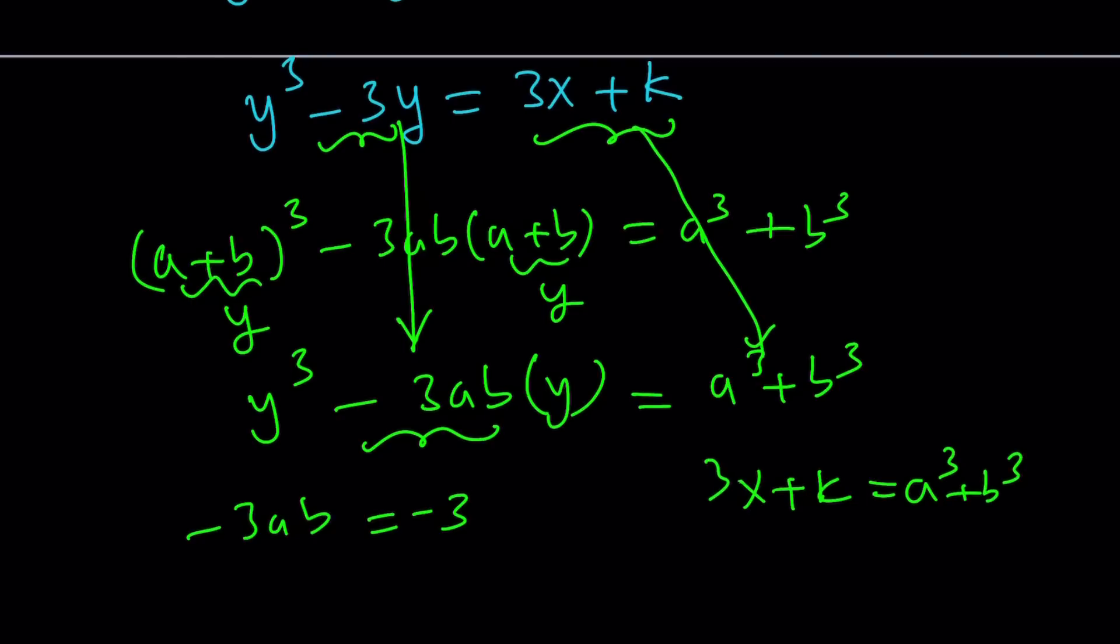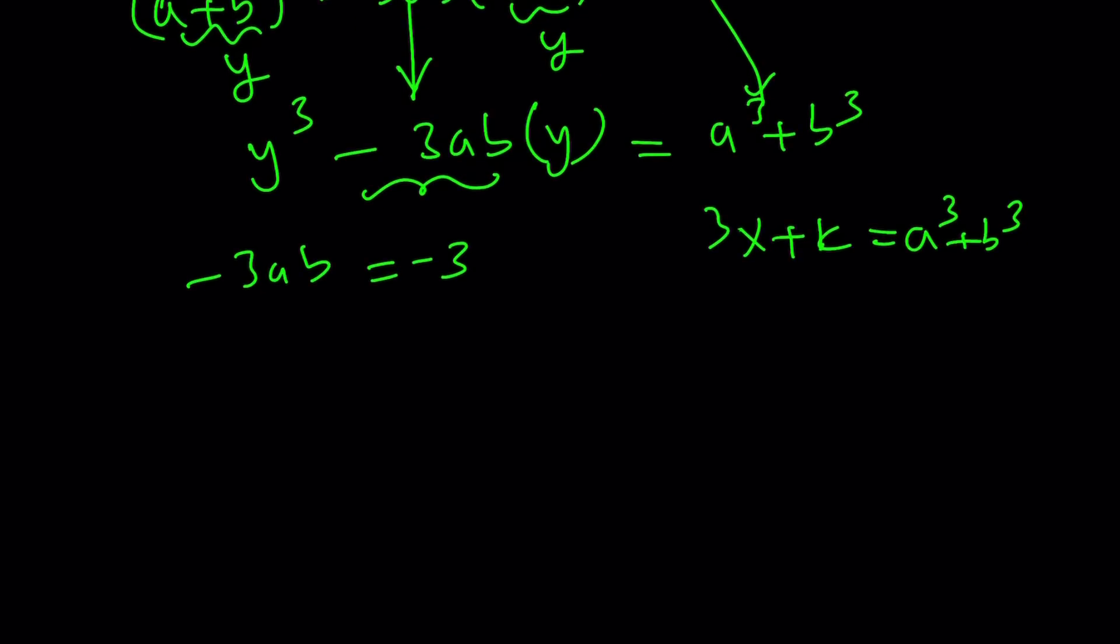So, we kind of got a system of equations. Let's simplify this a little bit. Write this like ab equals 1. And a cubed plus b cubed equals, maybe I should write it here so it looks nicer as a system. This is our system of equations. And don't worry, this is not cubic.